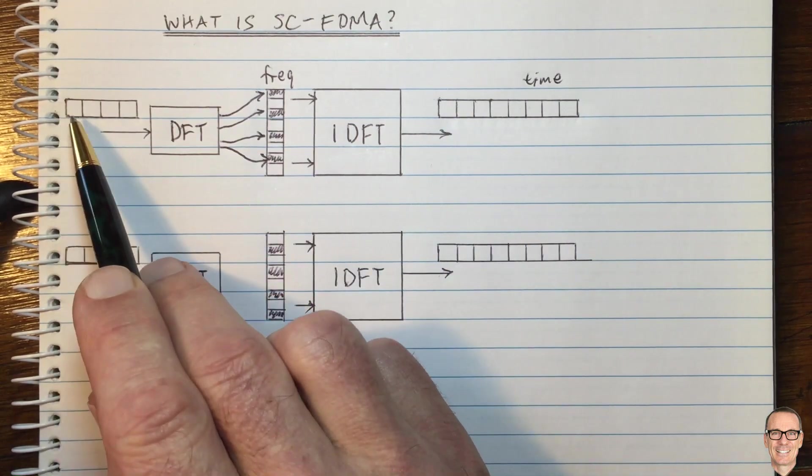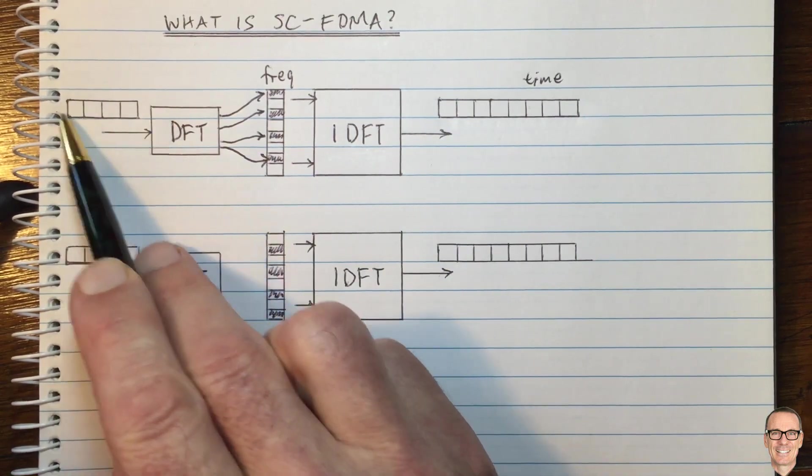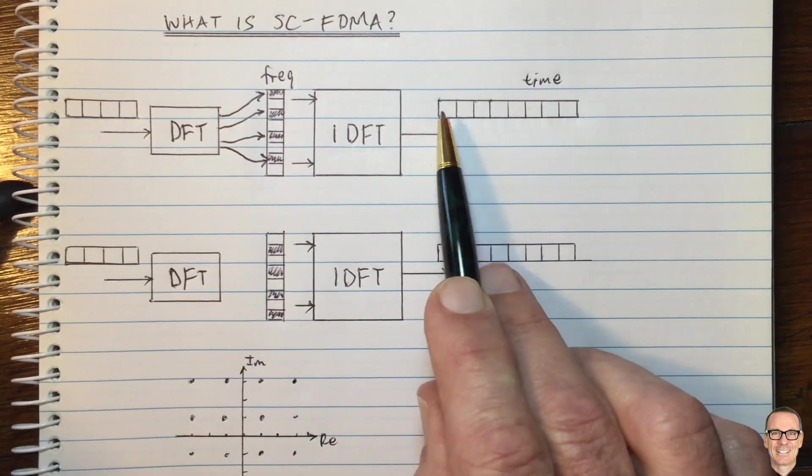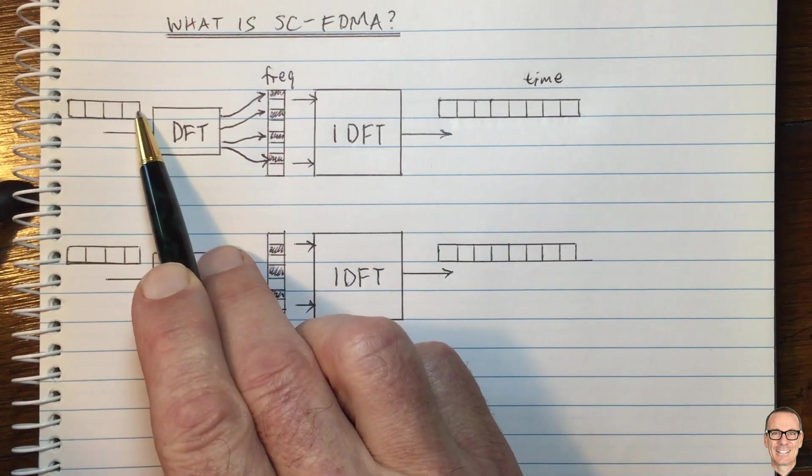But this vector gets sent over the same time as this vector here. So there is a compression in time. And so that means that the bounded peak to average ratio here exactly holds for this sequence here because this sequence is just a repeated version of this sequence.